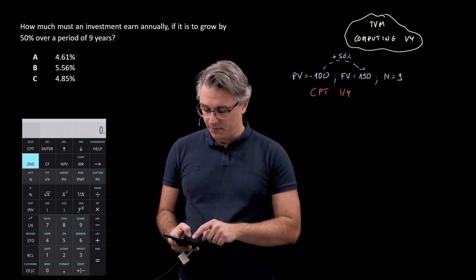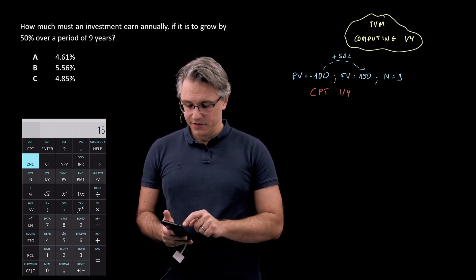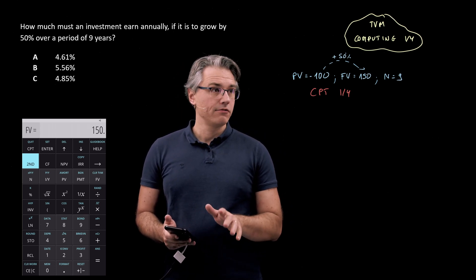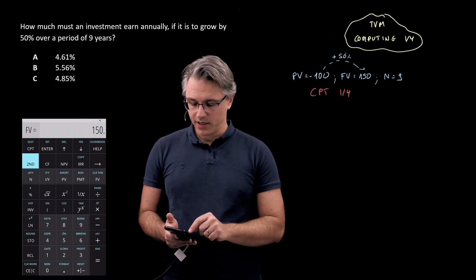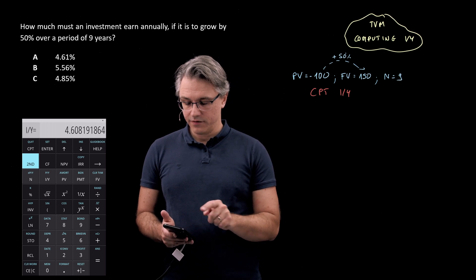And now let's make the inputs: 100 negative for PV, 150 for FV. I'm ignoring PMT. I just need to have 9 for N and compute I over Y.